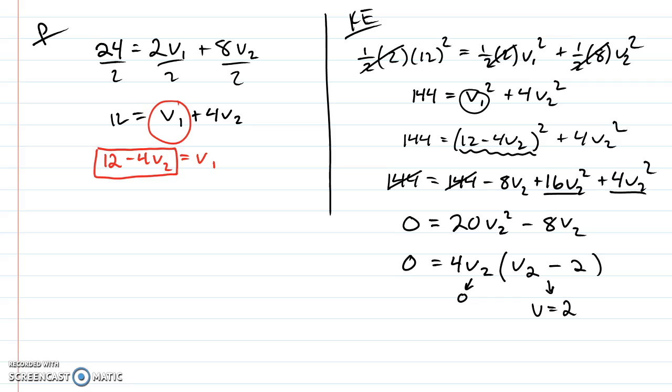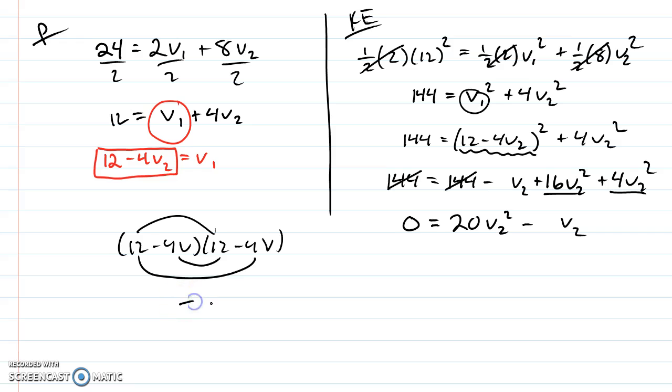And I paused for a second because I realized something here. When I FOILed this out, this number is incorrect. Let's go back and resolve this. When I FOIL out 12 minus 4v times 12 minus 4v, I'm going to get 144, but I'm going to get these two, which are both negative 48v. So really, I should have negative 96v squared.